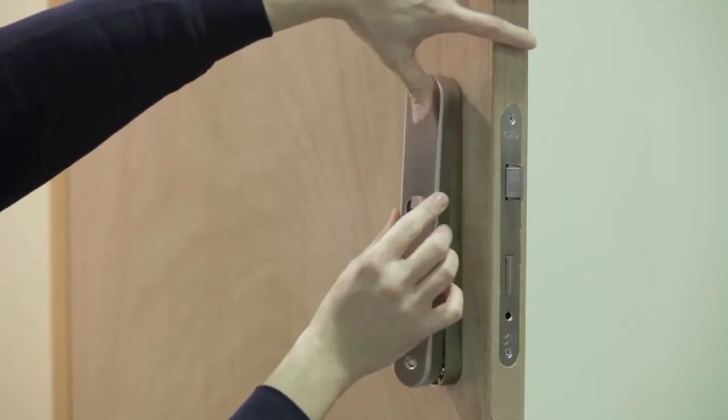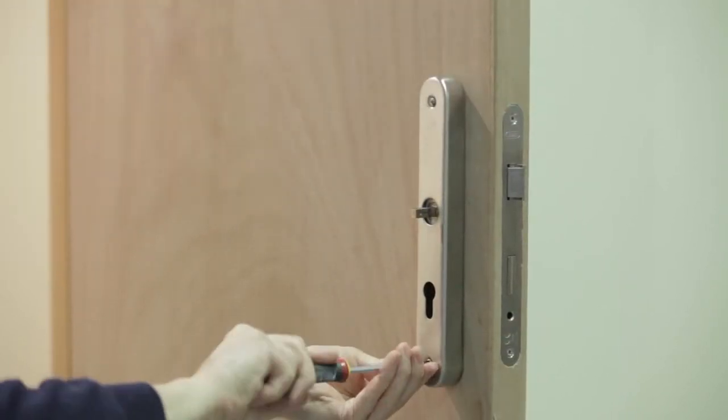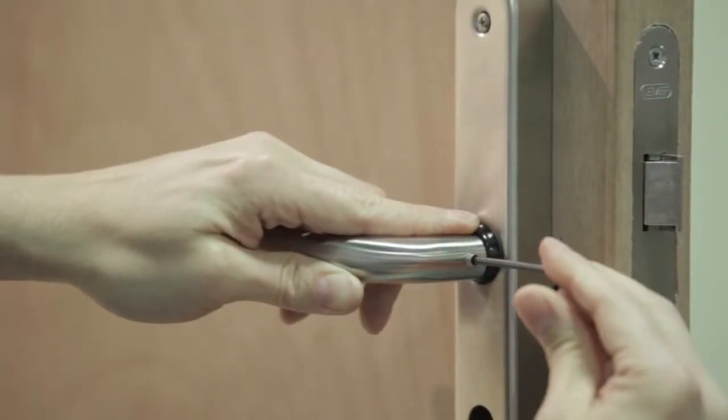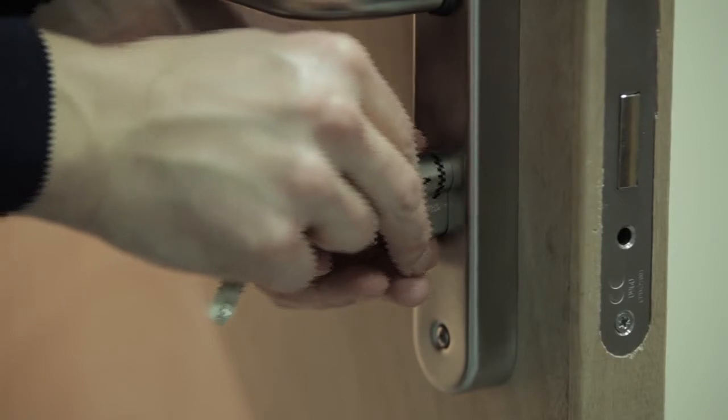Attach the internal cover plate with the screws provided and install both handles with their respective nylon spacer, then secure in place with the provided grub screws. At this stage, install your required cylinder.